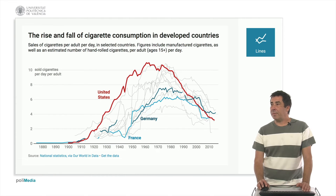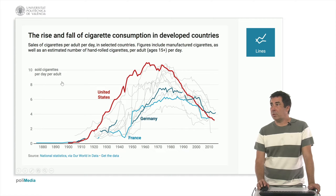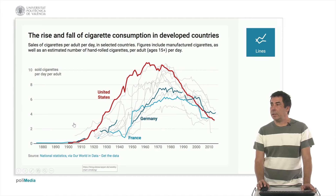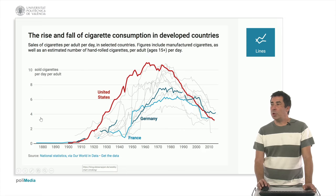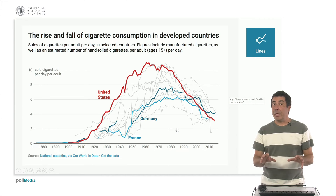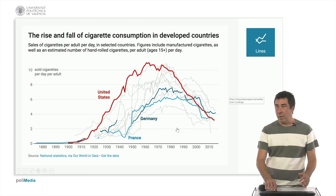Here, for instance, one of the first representations is with lines. We have an example: the rise and fall of cigarette consumption in developed countries, a dataset extracted from Our World in Data, also available on the Datawrapper website. We have years on the x-axis, the number of cigarettes sold per day per adult on the y-axis, and we can show tendencies for different countries. Some countries like Germany, France, and the United States are highlighted above the others.